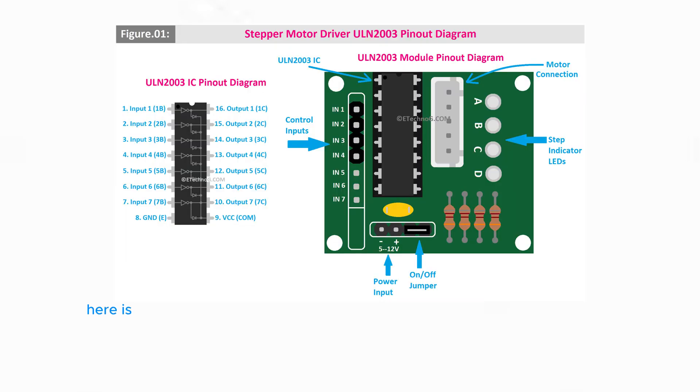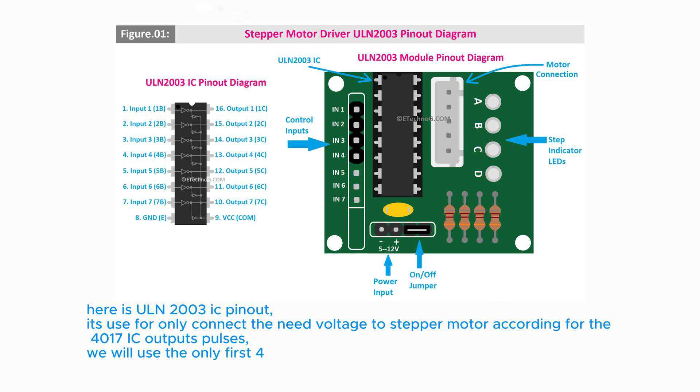Here is ULN 2003 IC pinout. Its use is for only connecting the needed voltage to stepper motor according to the 4017 IC output pulses. We will use only the first 4 input pins and will connect the socket of stepper motor here. We will connect 12V DC power supply here.